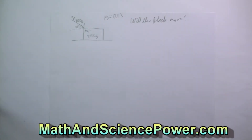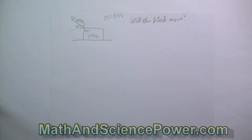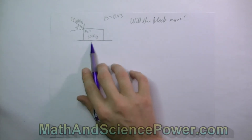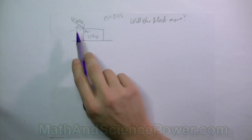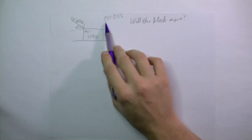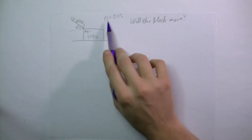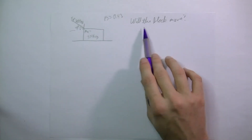Welcome back to MathAndSciencePower.com. My name is Joe. Please remember to subscribe, comment, and rate and share the videos, and visit us online for a complete listing. So we were posed with the problem of the 35 kilogram box: we're applying 300 newtons of force at an angle of 40 degrees, the coefficient of static friction is 0.43, and the question is, will the block move?